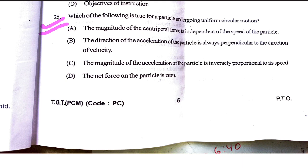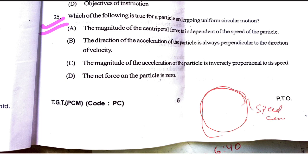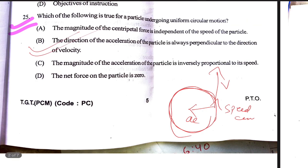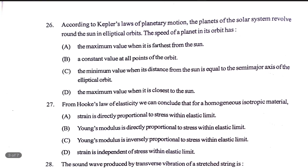Which of the following is true for a particle undergoing uniform circular motion? The circle is fixed and the speed is constant. When the velocity changes direction, the direction of the particle is always perpendicular to the direction of the velocity.